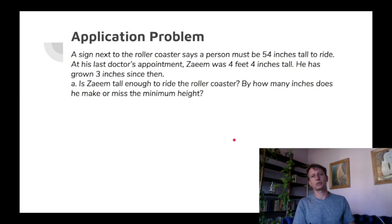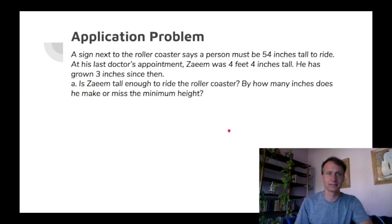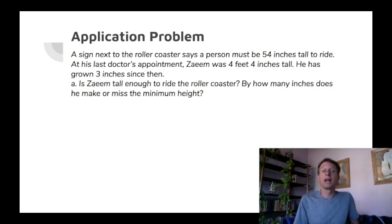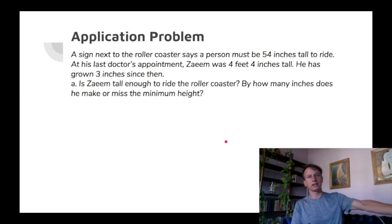Let's answer a question hearkening back to our linear measurement conversions in the customary system, feet and inches. A sign next to the roller coaster says a person must be 54 inches tall to ride. At his last doctor's appointment, Zaim was 4 feet 4 inches tall. He has grown 3 inches since then. Is he tall enough to ride the roller coaster? And by how many inches does he either make or miss the minimum height?